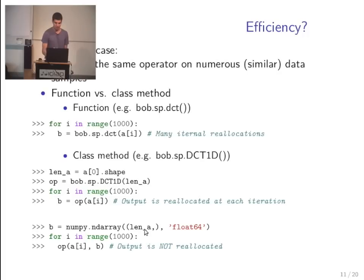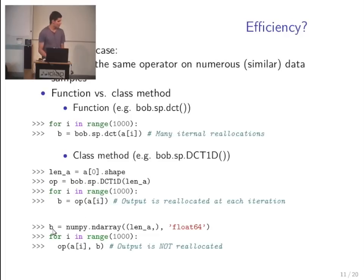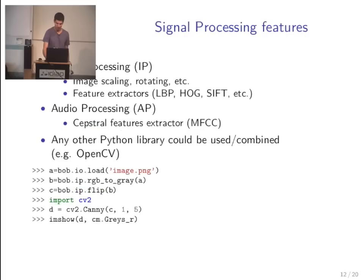We try to provide an API that is convenient for experimentation — simple function calls — but when scripts require more computing power we optimize the Python code using the class-based structure. If a piece of code is truly a bottleneck and too inefficient in Python, we write the full block in C++, put it inside a class or function, and then bind it to provide a Python API so it can be called from Python. That's what we do when we need to optimize.